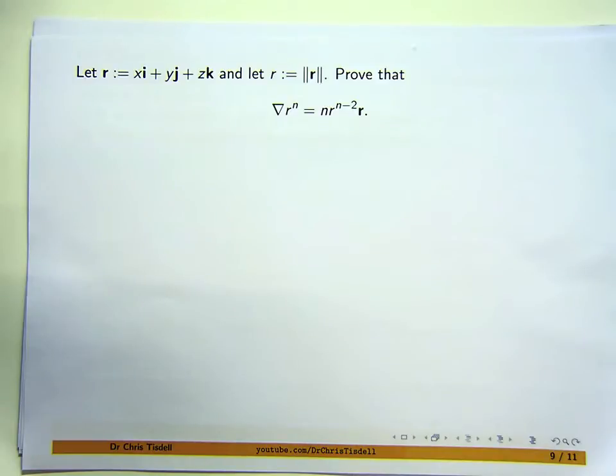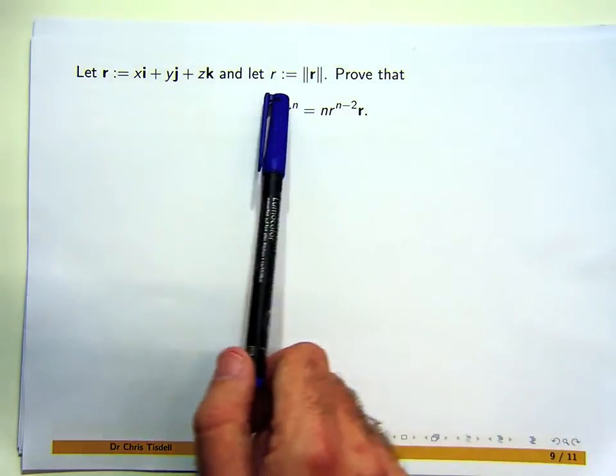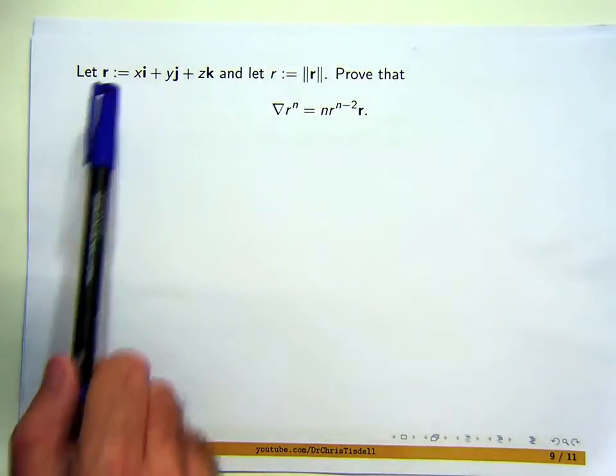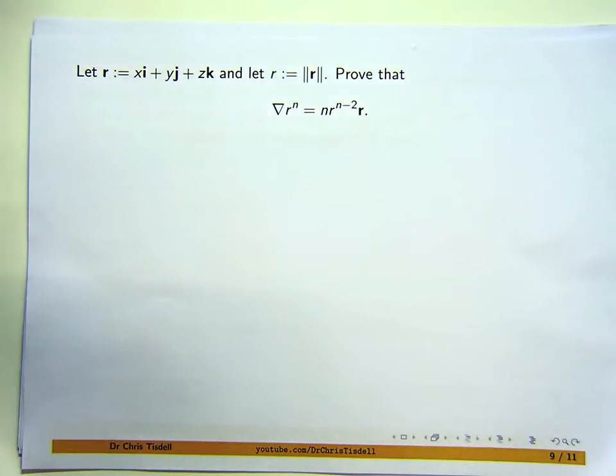Now this non-bold-faced r is the magnitude of this vector, or the norm sometimes they call it of this vector. So don't be confused between the boldface. The boldface means a vector and the non-boldface just means a number or a scalar. In this case r will be a function, a real-valued function of x, y, and z.